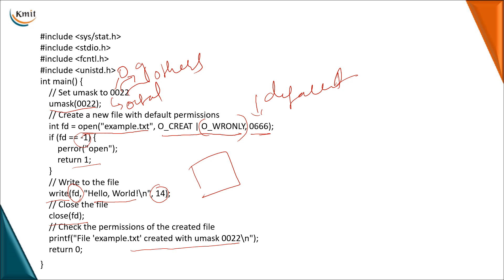So in today's class we have learned about different system calls that can be used on a directory structure: opendir, readdir, closedir, mkdir, rmdir, and umask.